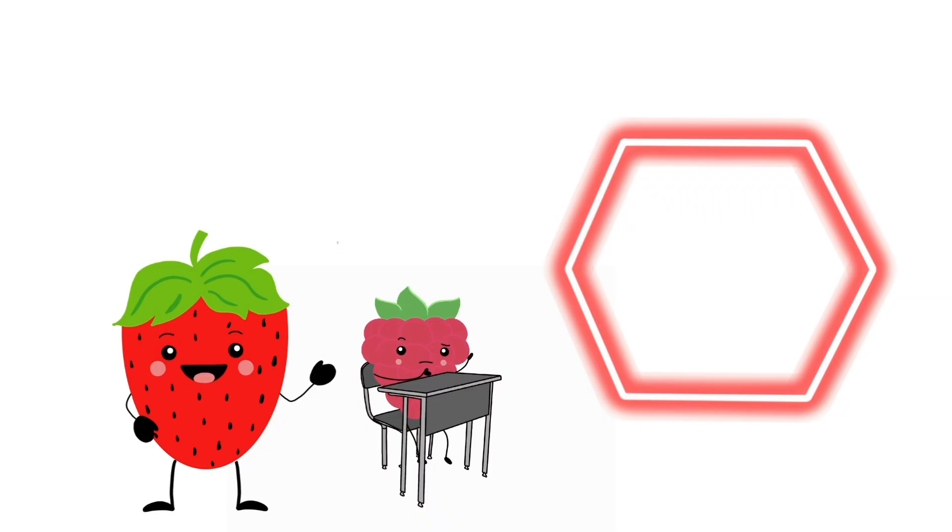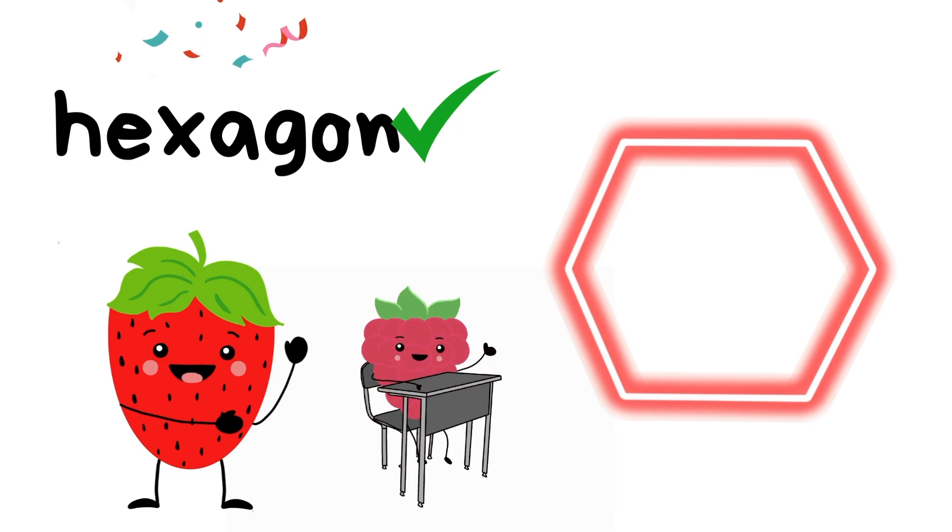What about this object? Is it a hexagon? Does it have six sides? Show me your thumbs up. This is a hexagon. It has six sides which means it's a hexagon.